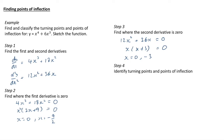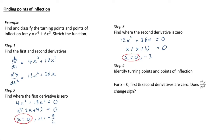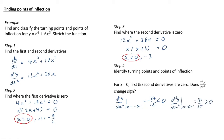Step four: identify turning points and points of inflection. At x = 0, both the first and second derivatives are zero. To identify it as a point of inflection, we check whether d²y/dx² changes sign. At x = −0.1, d²y/dx² = −87/25 (less than 0); at x = 0.1, d²y/dx² = 93/25 (greater than 0). It has changed sign, so all those facts together tell us we have a stationary point of inflection.